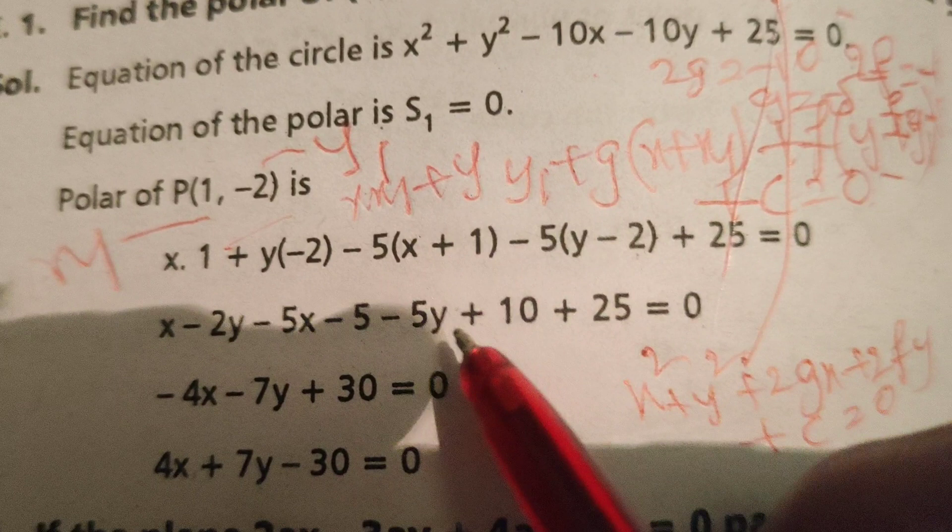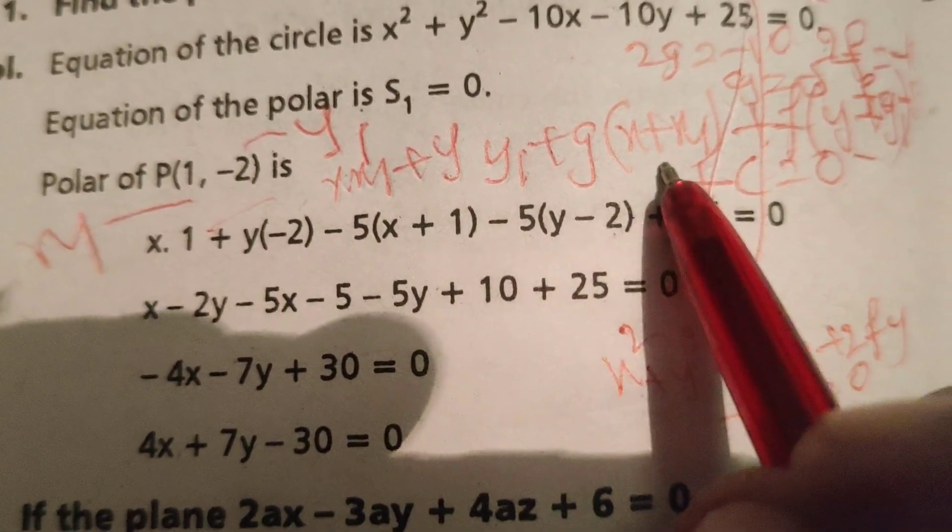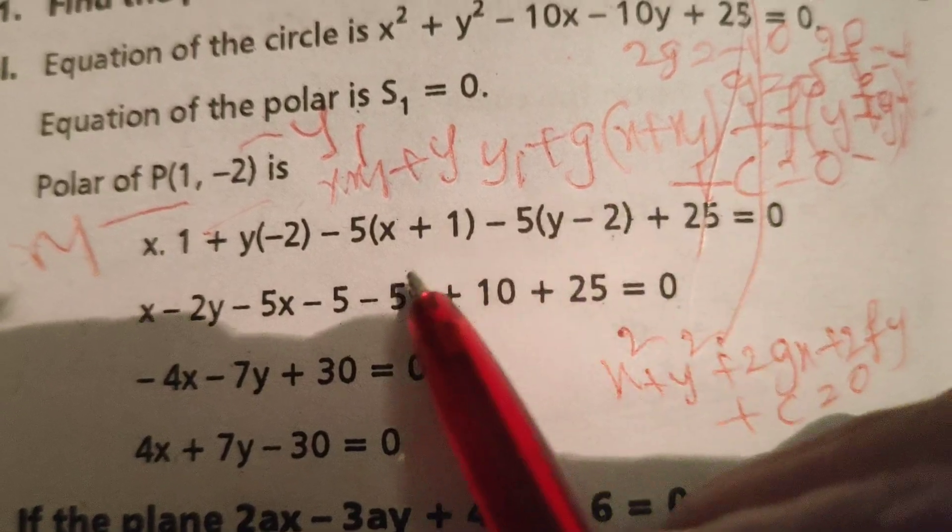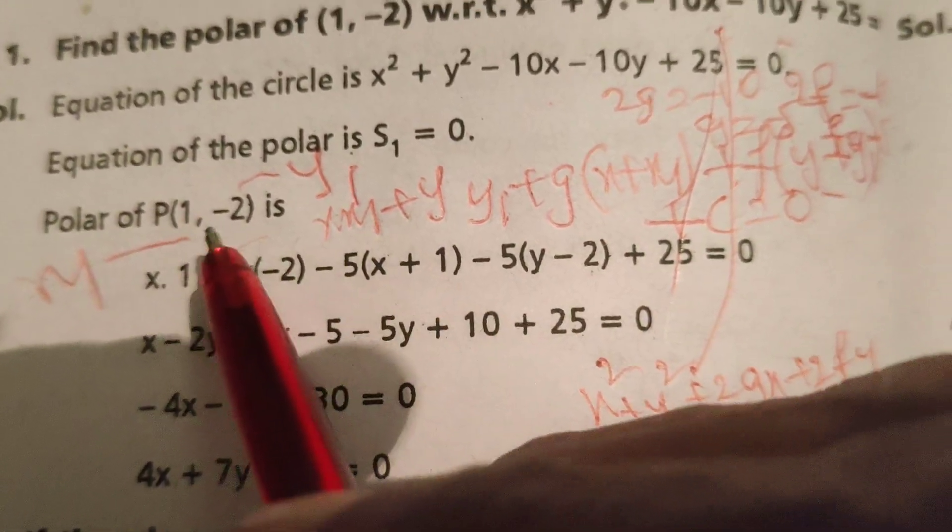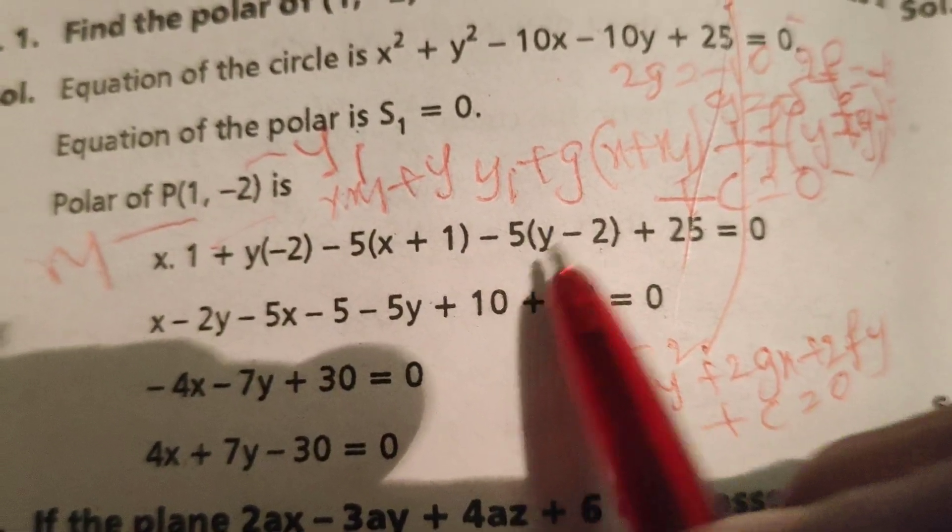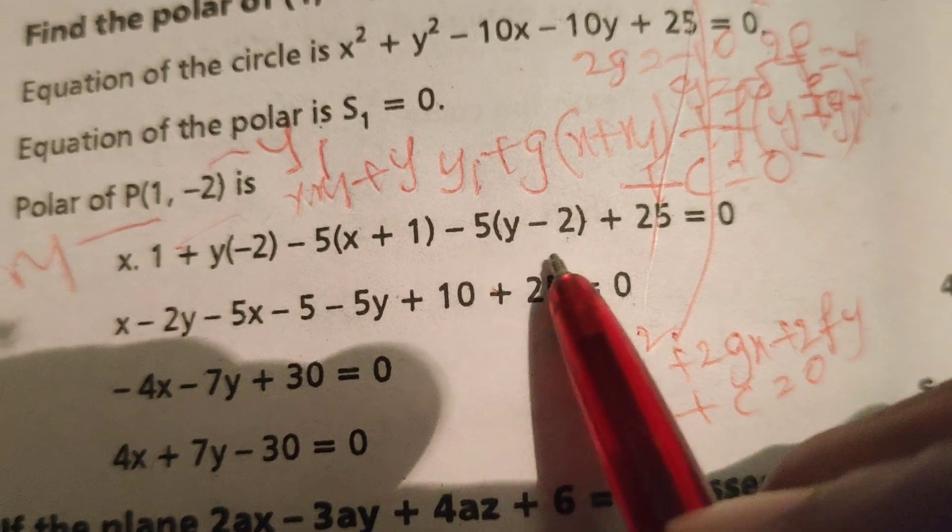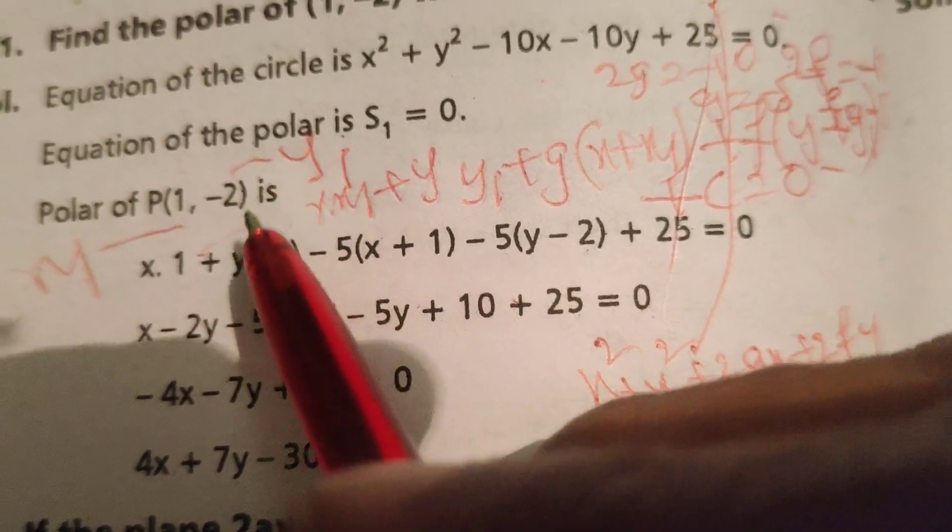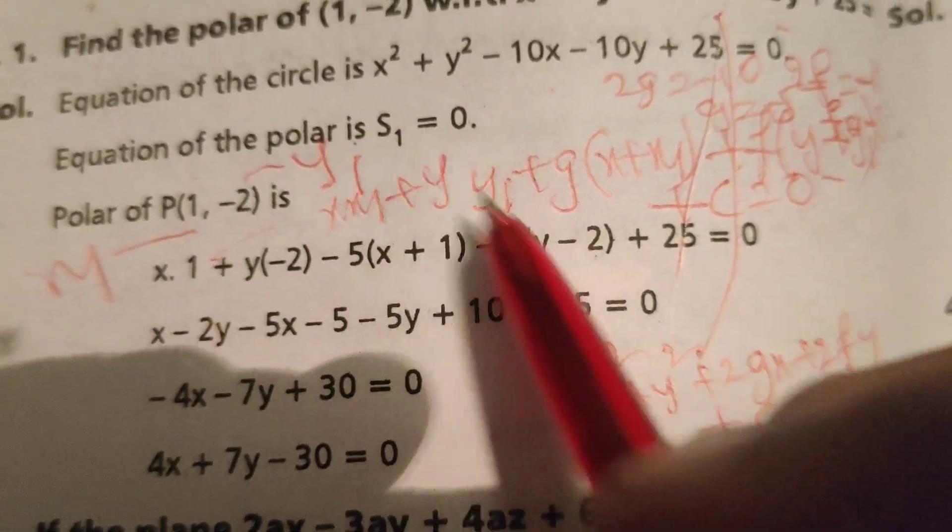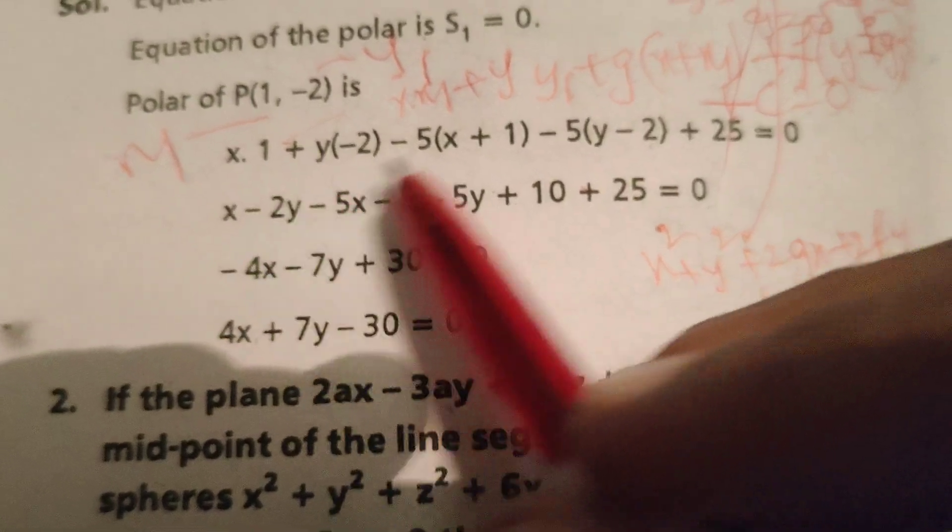...minus 5(x + 1) minus 5(y - 2) + 25 = 0. This gives x - 2y - 5x - 5 - 5y + 10 + 25 = 0.